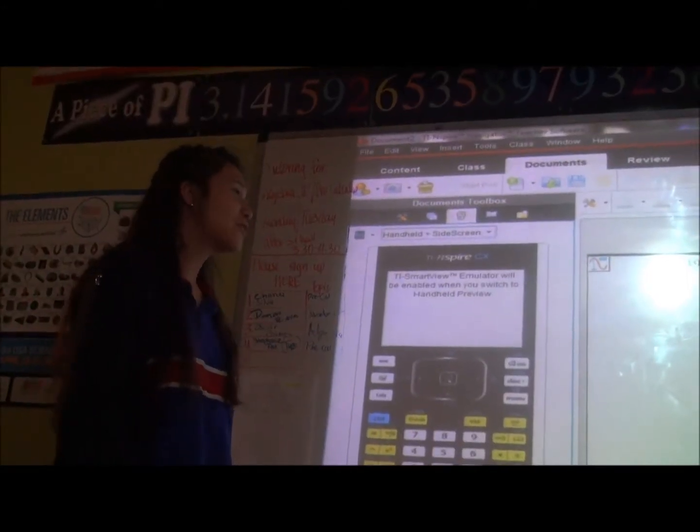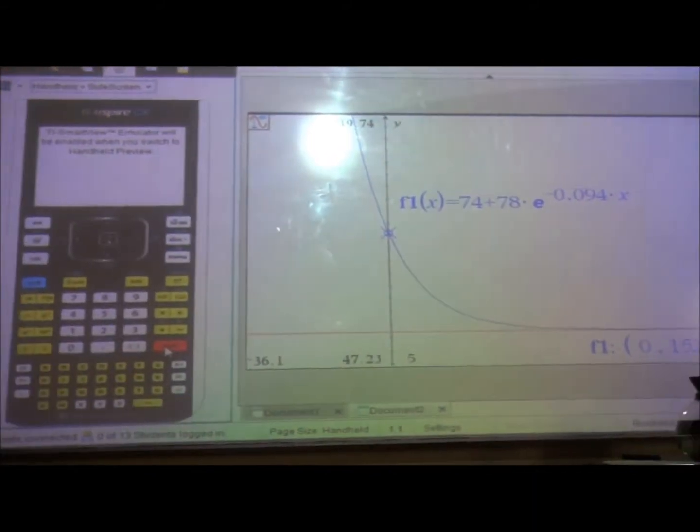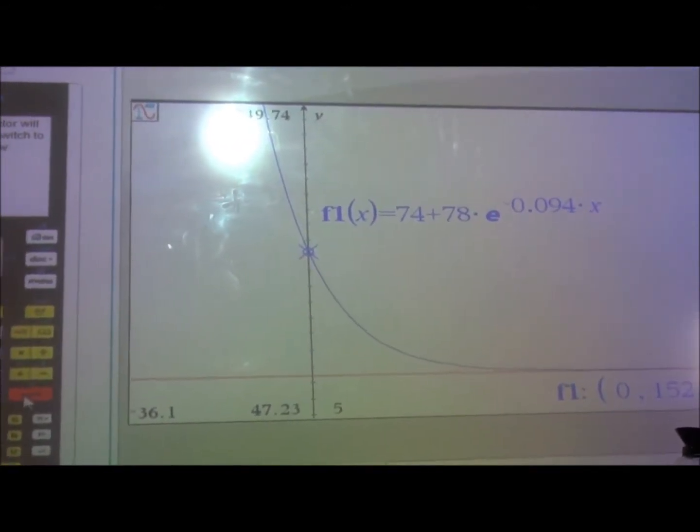With Newton's law of cooling, we came up with this formula. And as you can see, it's an exponential decay because the temperature is dropping.